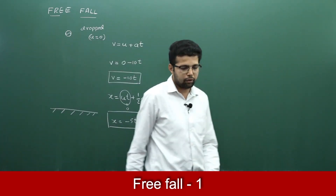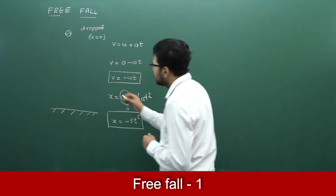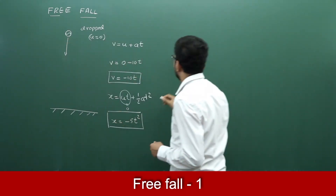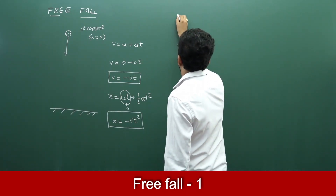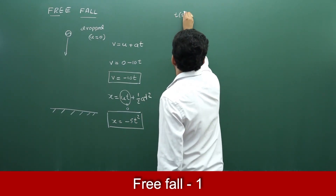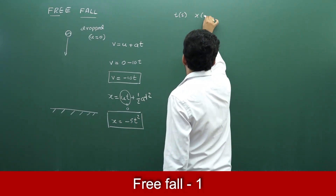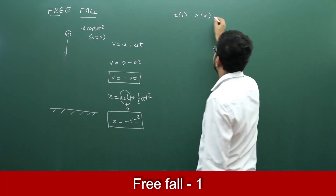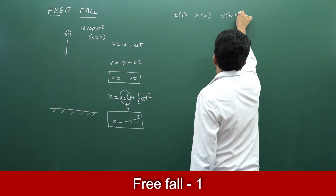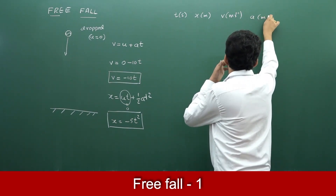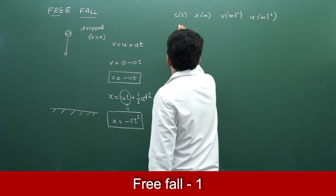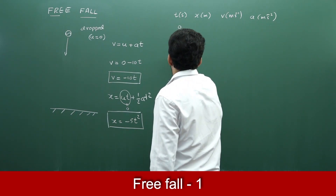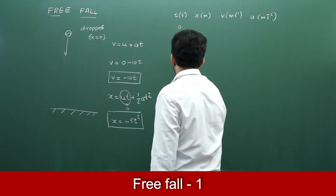We will draw a table wherein the first column is time in seconds, the second is displacement in meters, the third is velocity in meter per second, and the fourth is acceleration in meter per second square. Time t goes from 0, 1, 2, 3, 4, 5.